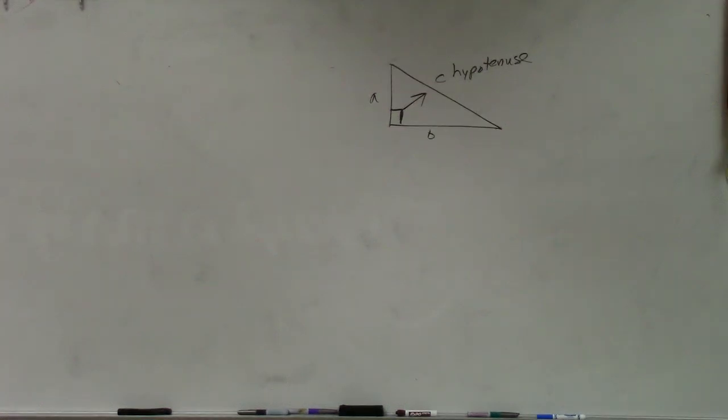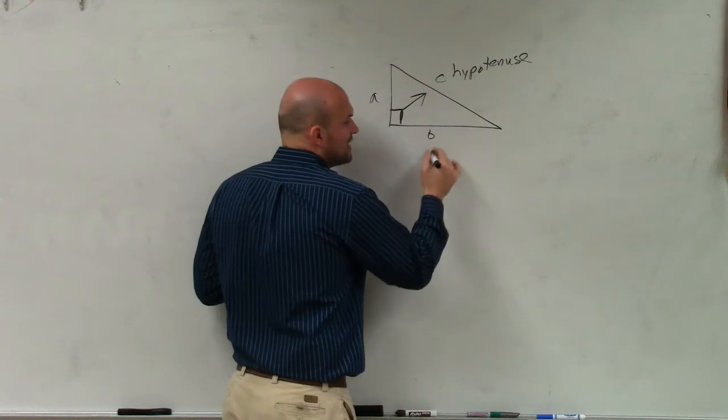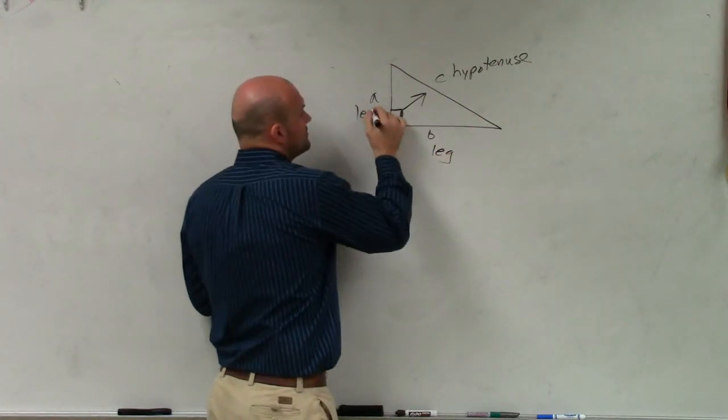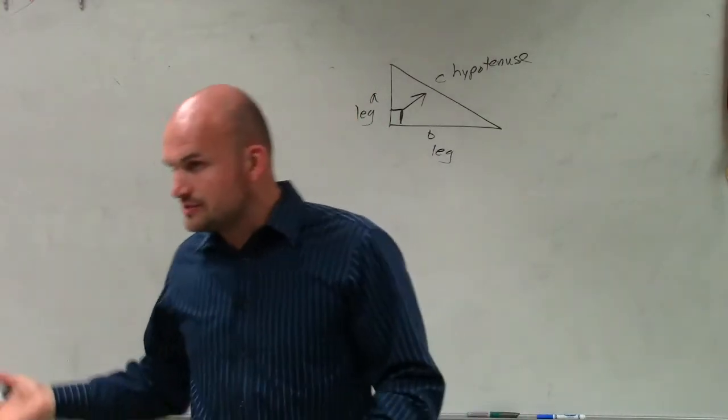So the next version that I want to talk about. So here we have the hypotenuse. Now, when doing the Pythagorean theorem, we call these legs, because really, the Pythagorean theorem, all it is is leg squared plus leg squared equals hypotenuse squared.